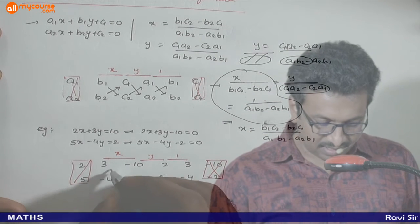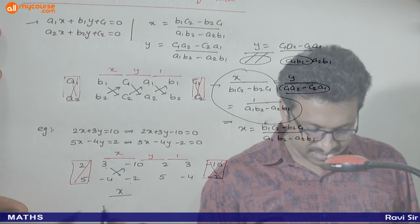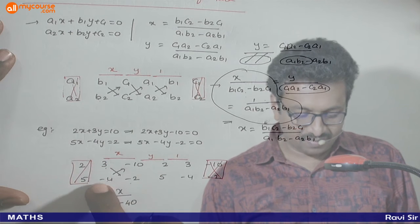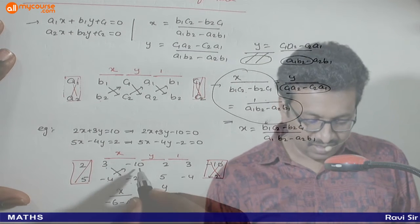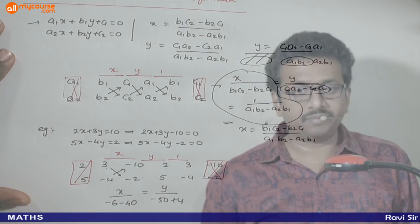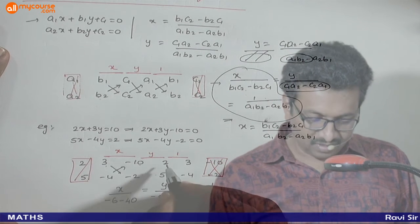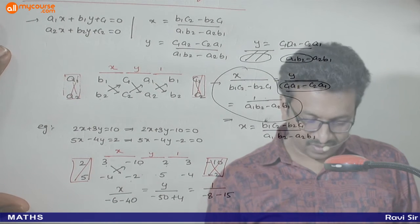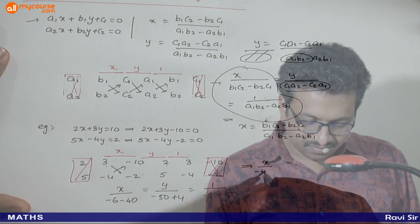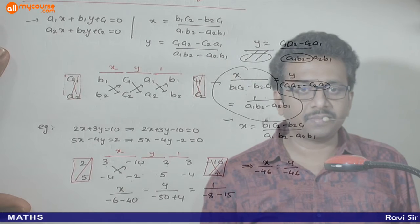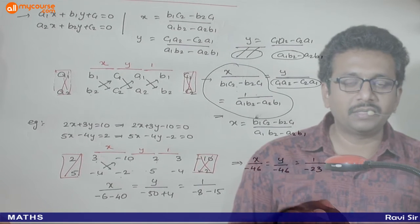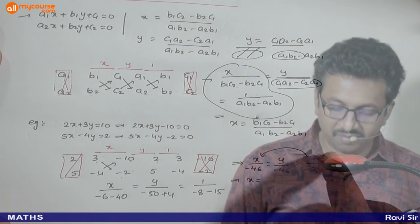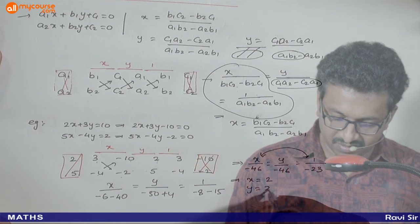Now applying to our example: x divided by — 3 × (-2) = -6, minus (-10) × (-4) = -40, so -6 - 40 = -46. Equal to y divided by: (-10) × 5 = -50, minus (-4) × 2, which is +8... wait — this gives -46. Equal to 1 divided by: 2 × (-4) = -8, minus 5 × 3 = 15, so -8 - 15 = -23. Therefore x = -46 / -23 = 2 and y = -46 / -23 = 2.